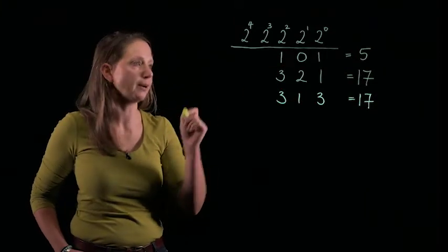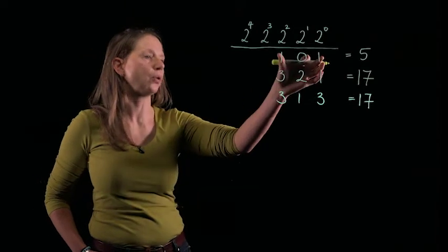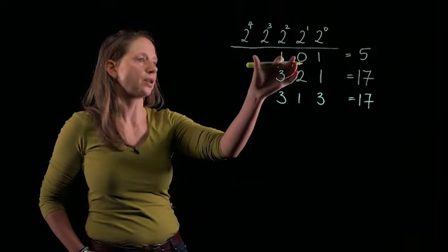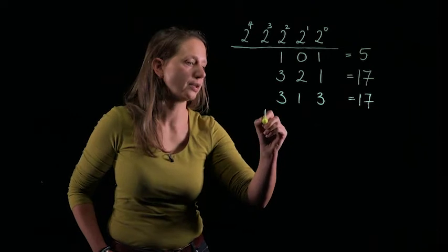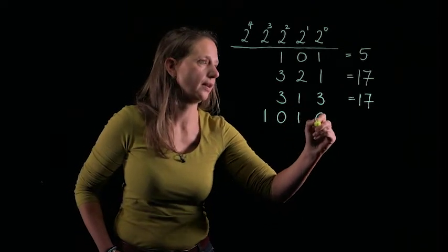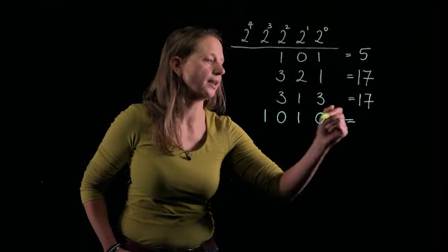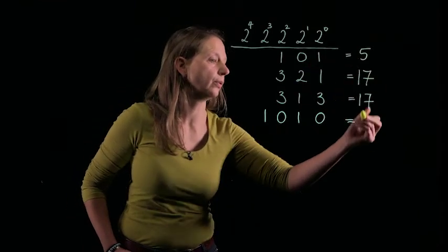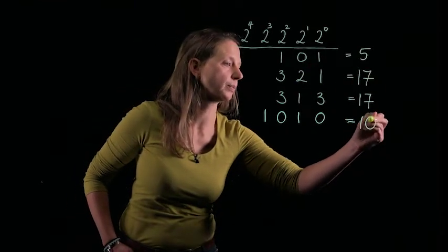There is something useful that we can use from binary. In binary, if I move all of the digits one column to the left, so if I write 1, 0, 1, 0, what I have done is I've multiplied everything by 2. So I've taken 5, multiplied it by 2.